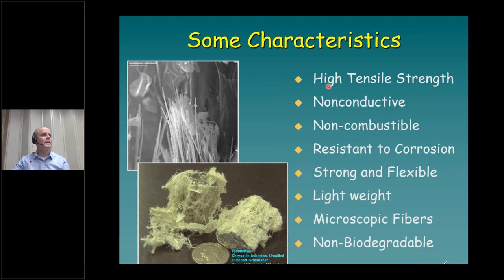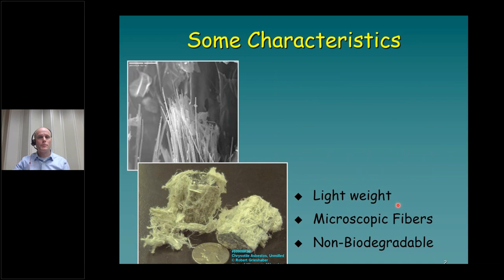The properties that make asbestos a great building material are: it has high tensile strength, it's non-conductive, non-combustible, resistant to corrosion, strong and flexible, lightweight, has microscopic fibers so you can make small materials out of it, and it's non-biodegradable. However, these last three characteristics — lightweight, microscopic fibers, and non-biodegradable — also make it a dangerous material.